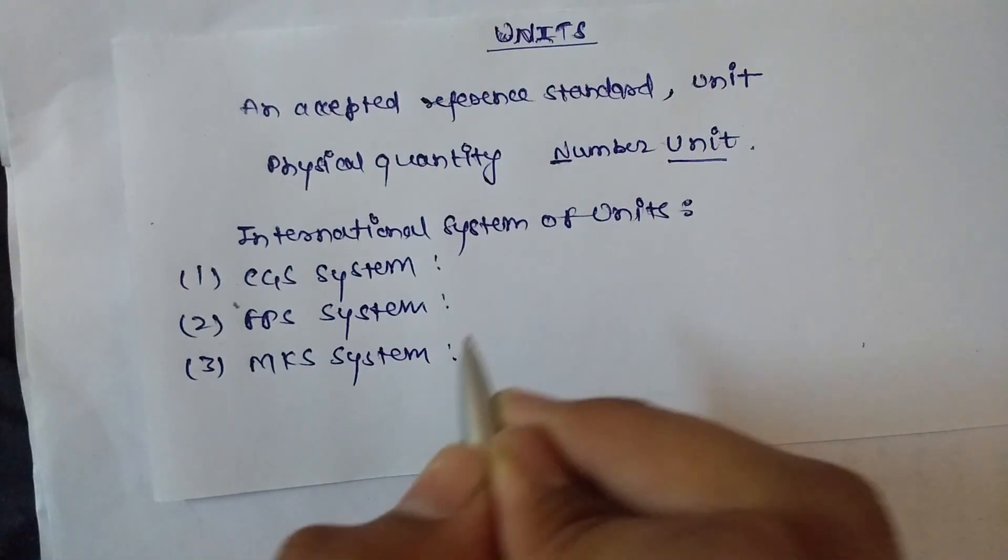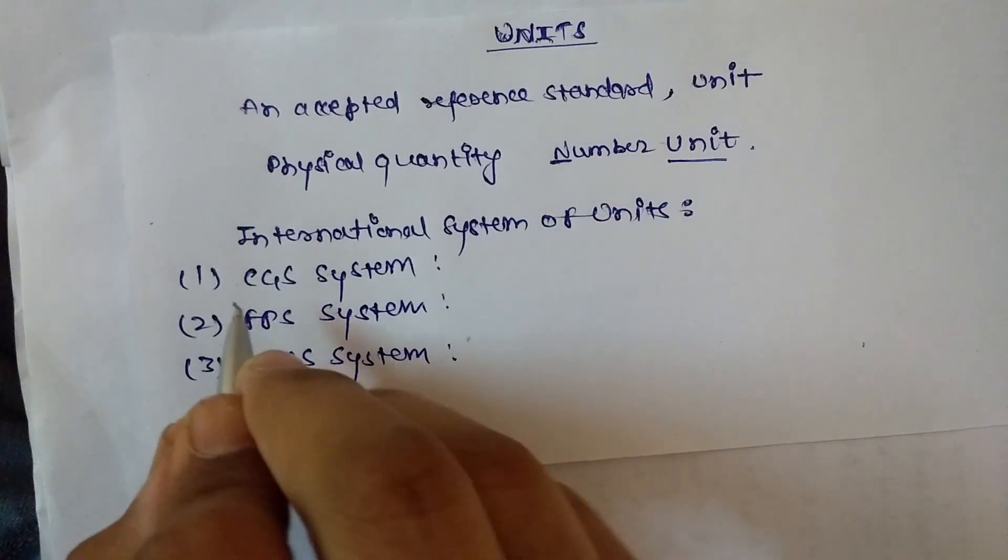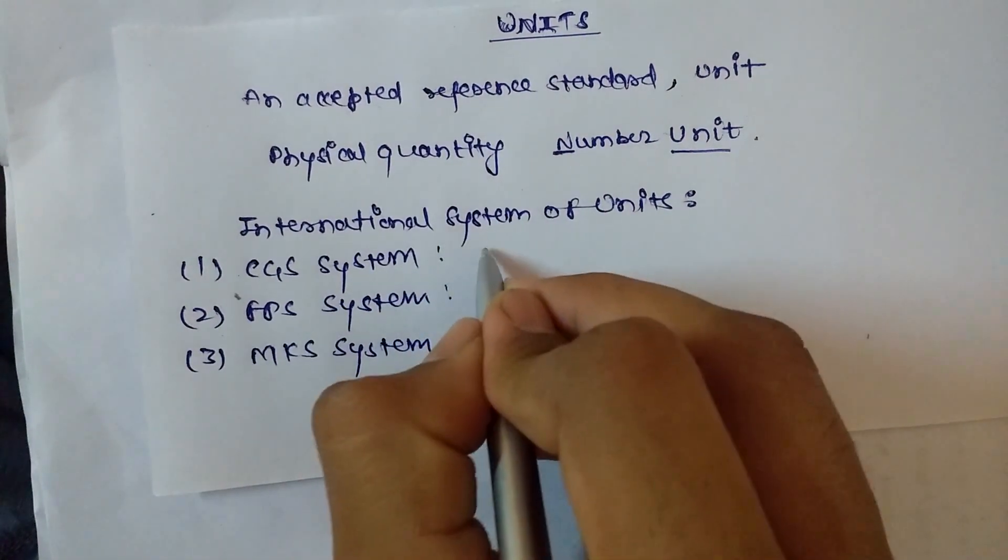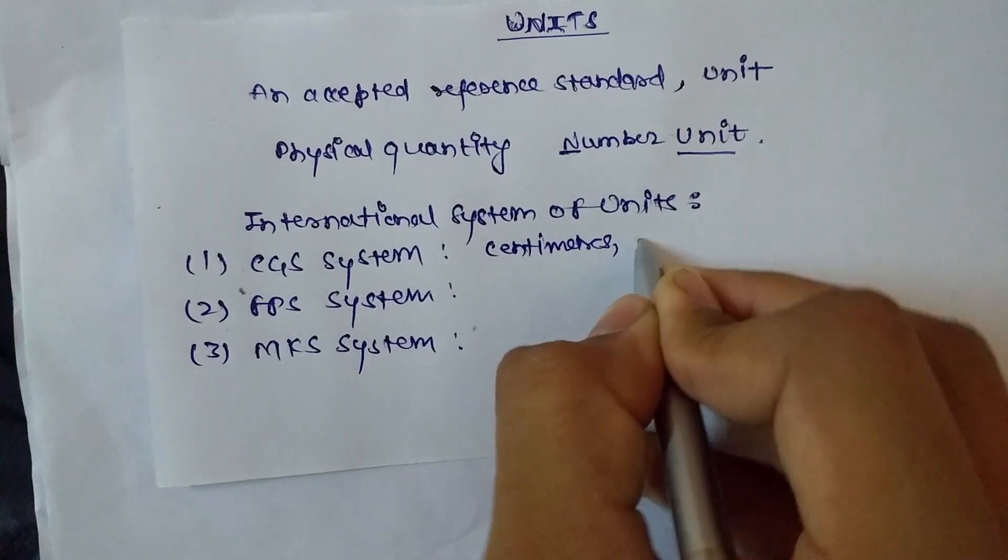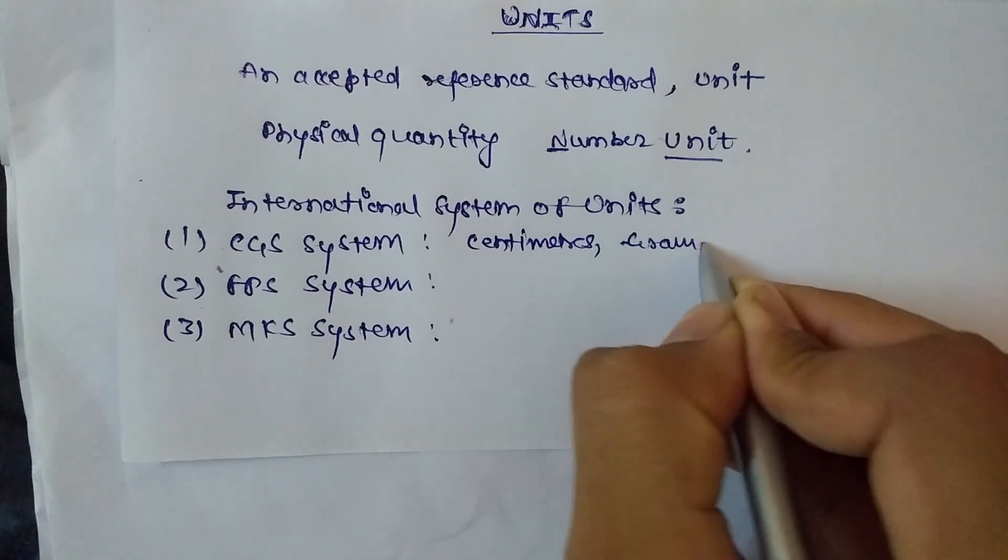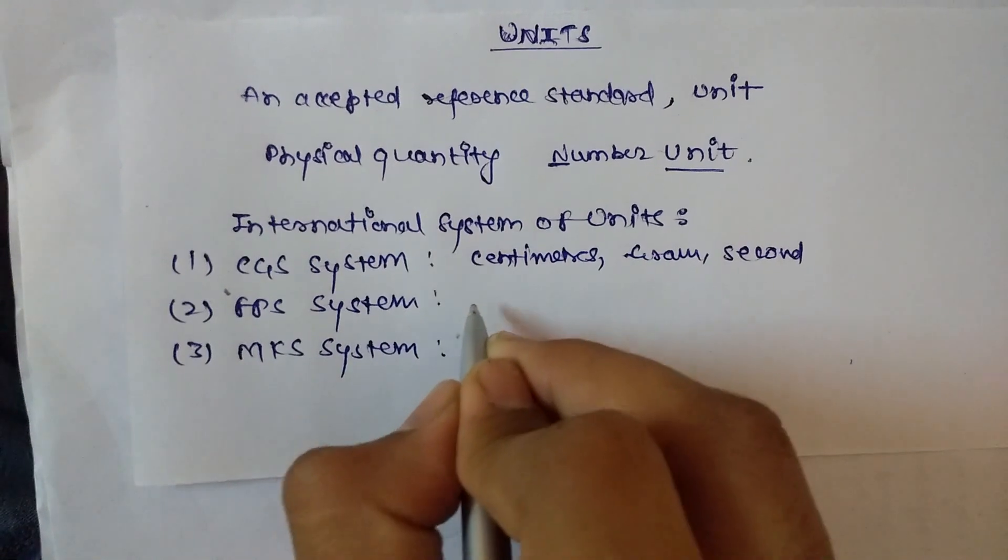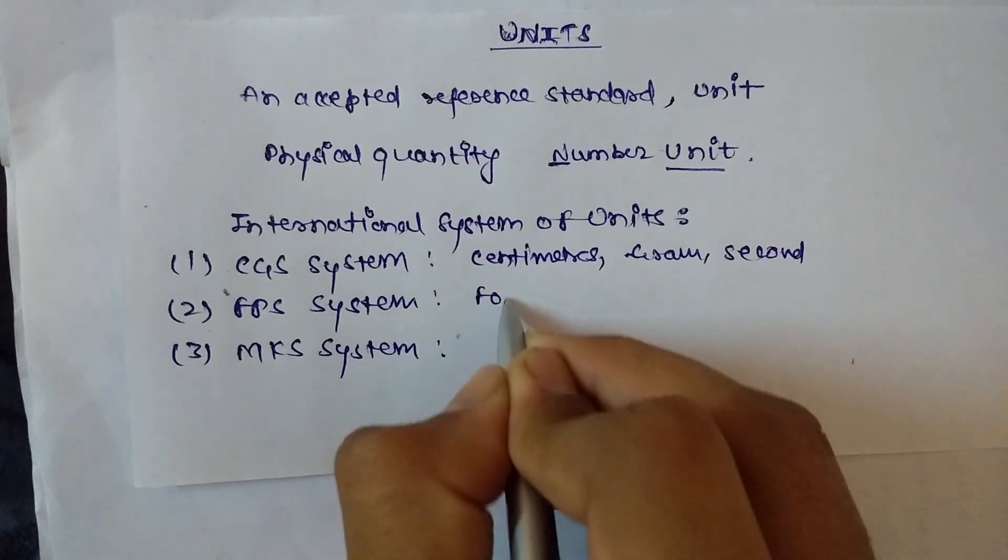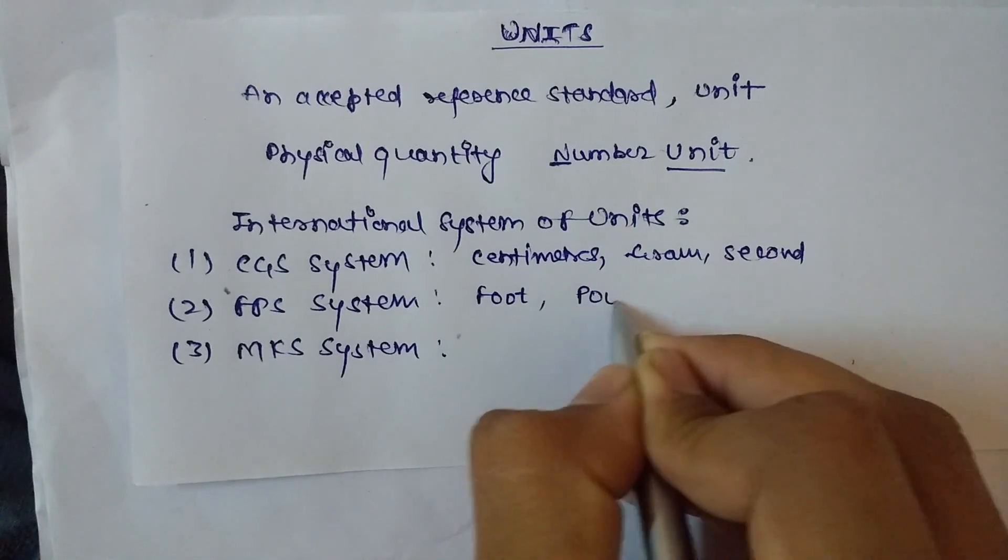Three popular physical quantities—length, mass, and time—in these systems are: in CGS system, length is centimeters, mass is gram, and time is second. In FPS system, length is foot, mass is pound, and time is second.